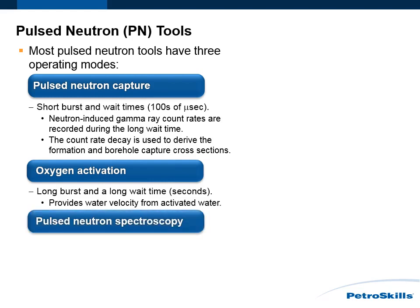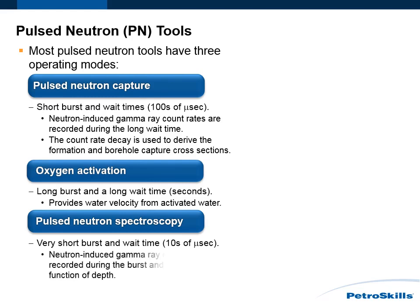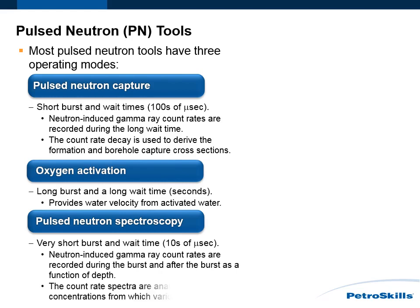Pulse Neutron Spectroscopy mode uses a very short burst and wait time on the order of tens of microseconds. Pulse Neutron-induced gamma-ray count rates are recorded during the burst and after the burst as a function of depth. These are called spectra. The count rate spectra are analyzed for elemental concentrations from which various ratios are derived.